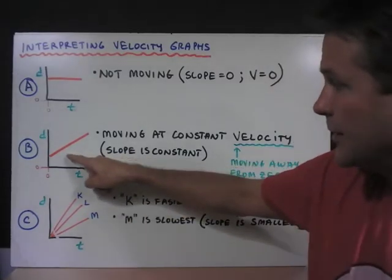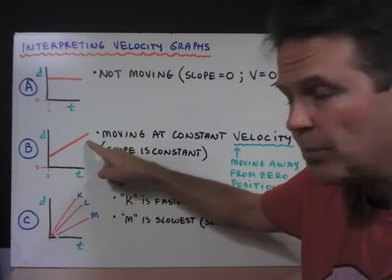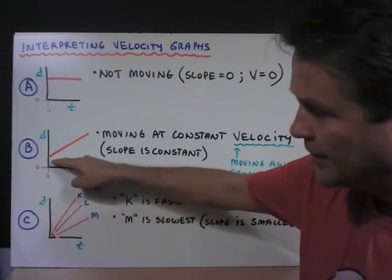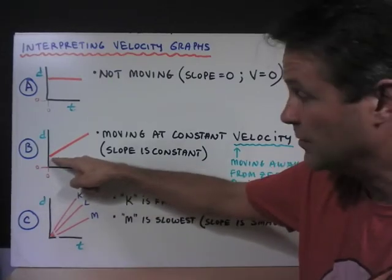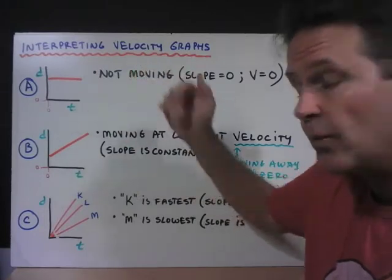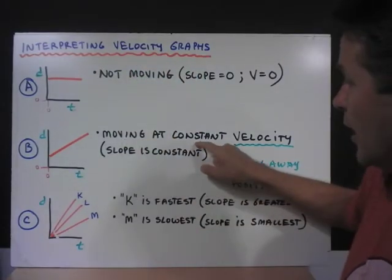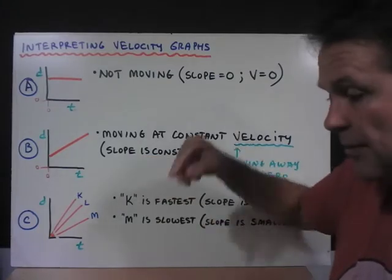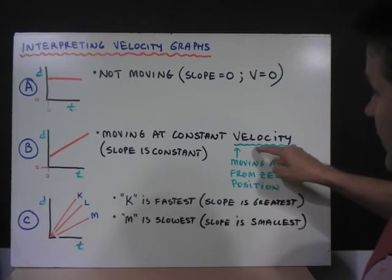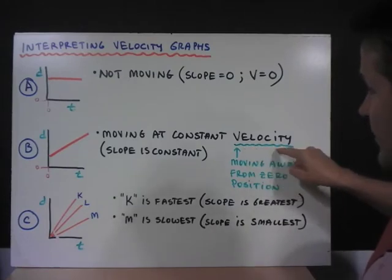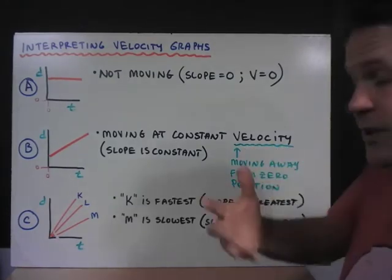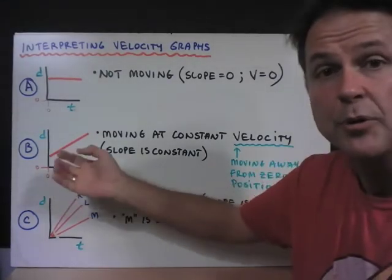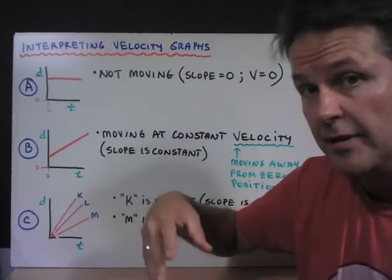If we look at graph B, we see that we have a positive slope. The object seems to be moving away from zero. It begins somewhere away from zero to start, but then it keeps moving further away. So it's moving at a constant velocity, and the slope is constant, like the example I showed you earlier. In this case, I'm talking about velocity because we're considering direction, that the object is moving away from zero, as opposed to moving towards zero.